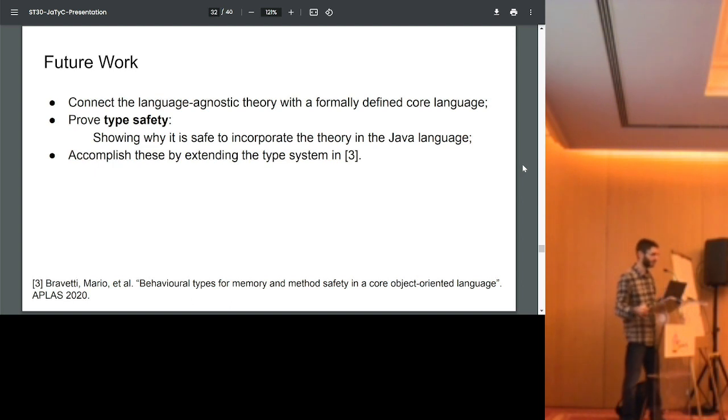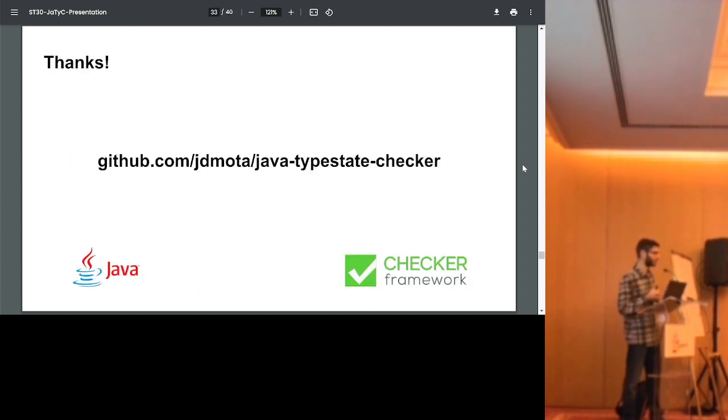As future work, we of course need to connect this theory with a formally defined core language so that we can actually prove type safety. That is a result that we have not done yet, but we trust that we can do it since we also got some practical results from testing with the tool I presented. And we plan to accomplish this by extending the type system presented in this paper that you can see below. The tool is open-sourced on GitHub in case you want to try it out. There are several examples and tests that you can also see. Thank you so much for listening and I'm available for any questions.